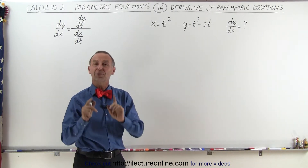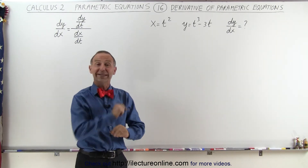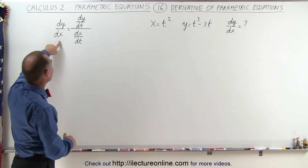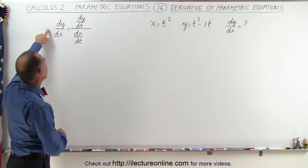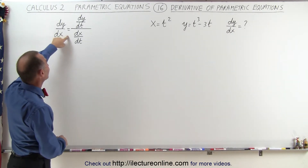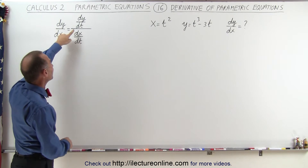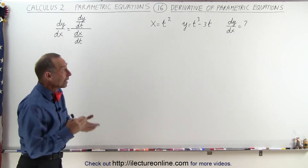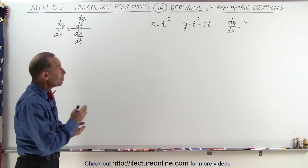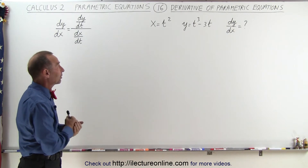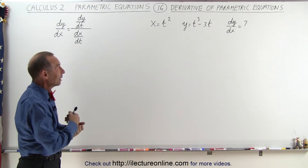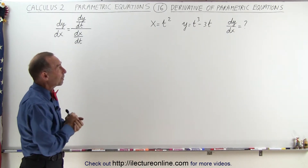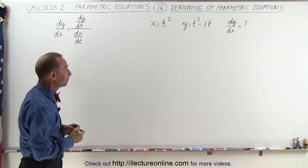We're trying to find dy/dx. We found in the previous video that dy/dx is equal to dy/dt divided by dx/dt. So to find dy/dx, we must first take the derivative of x with respect to t, then find the derivative of y with respect to t, and divide one by the other.